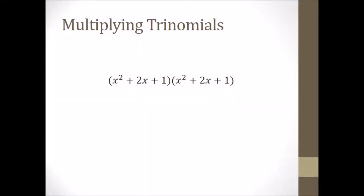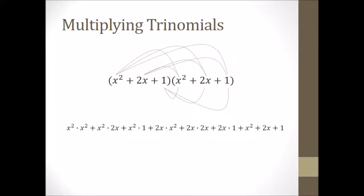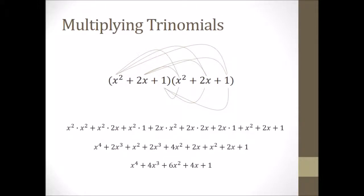Multiplying trinomials is a little bit more tricky because there are three different distributions that have to happen. The first is taking X squared and multiplying it to all of the terms in the other parentheses, then adding the next set of multiplied terms, and then the next. You'll have about nine terms total, then simplify by combining like terms to get your final answer. It's not necessarily difficult — it's more tedious. Just remember the pattern: the first term goes into all three of the other terms, then the second term does the same, and you repeat with the last term.